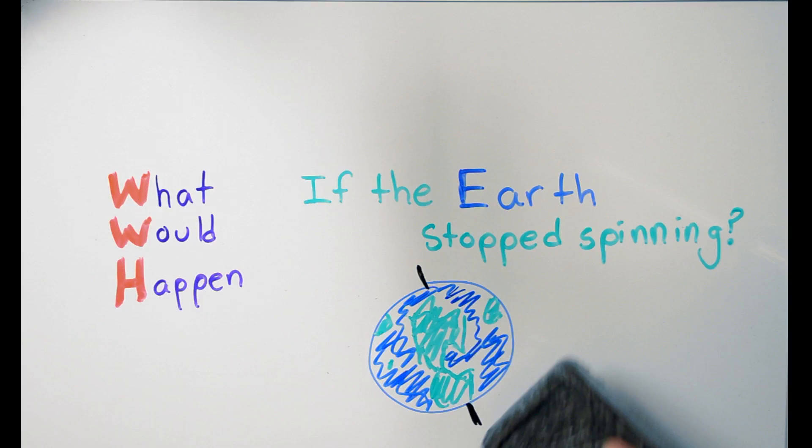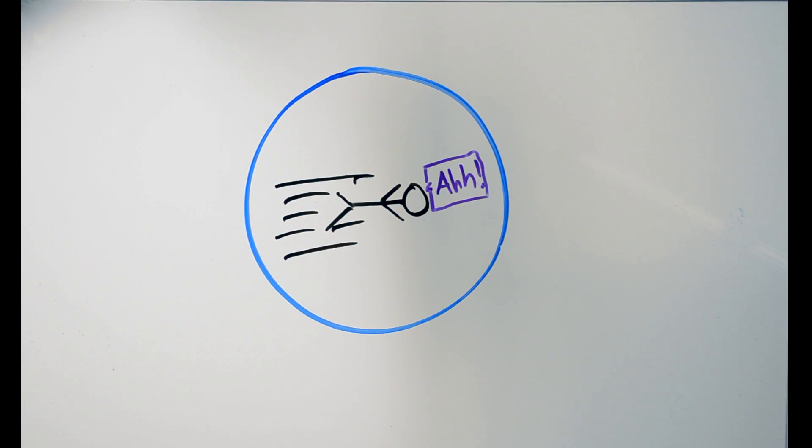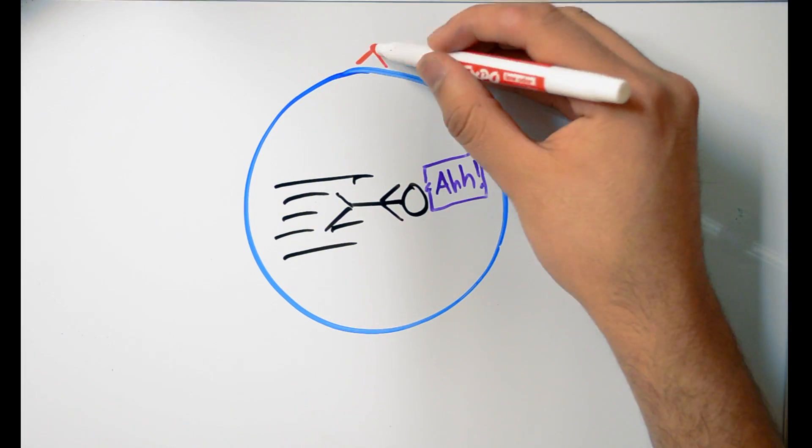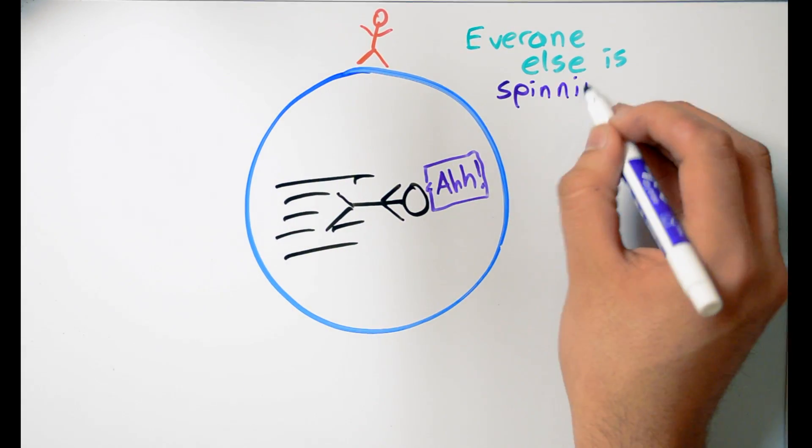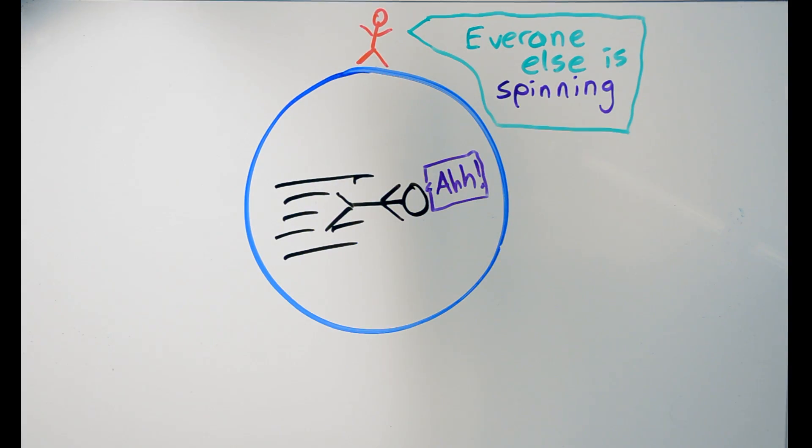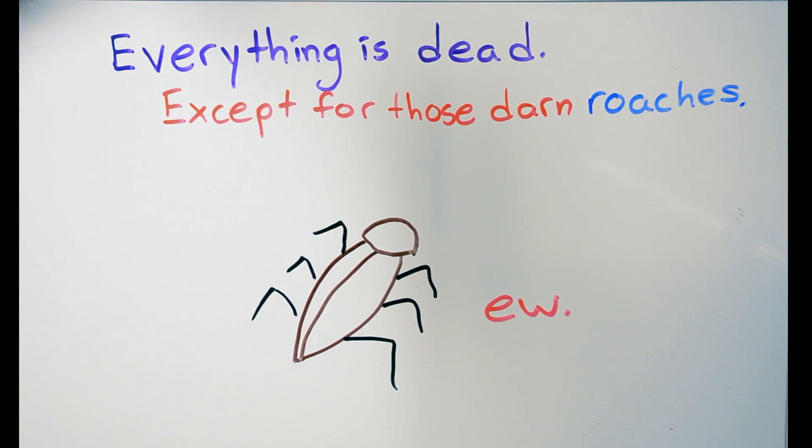If the Earth were to suddenly stop spinning, everything on it would continue to spin for a while, with a speed relative to its distance from the equator. Things at the equator would spin the fastest, and things at the poles would perceive almost no spin at all. This would, of course, be catastrophic, and many organisms and ecosystems would be wiped out.